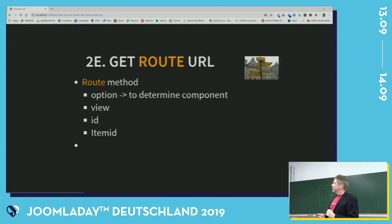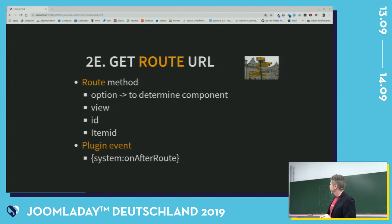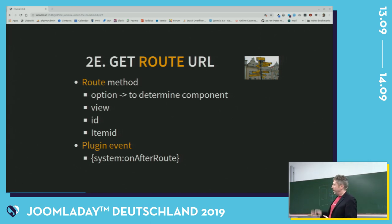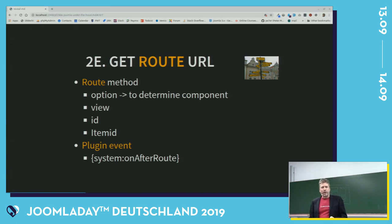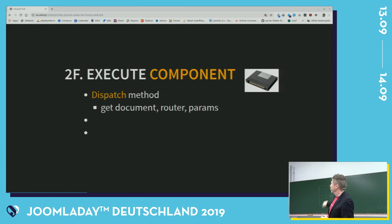Now we go to the route. The route method will determine the option, view, ID, and item ID. The option is used to determine which component should be loaded, and all other things are also needed at later stages. Here there is another plugin event: Joomla calls all the system plugins that have the 'onAfterRoute' method. Now, because we know the component — because the option has been loaded — the component will be dispatched, and the document, the router, and the params are retrieved for this component.